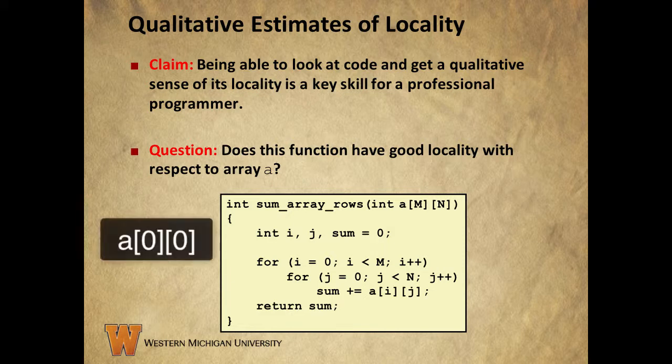First, the program will visit a[0][0], then a[0][1], etc. This, again, is the same order in which they're stored in memory, so we have a stride 1 reference pattern, giving us good spatial locality with respect to a.